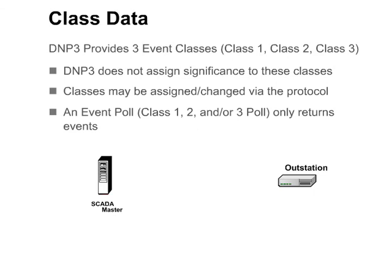The protocol specification does not assign any significance to the event classes. Some installations report binary input data in class 1 and analog input data in class 2. However, data can be assigned to the classes in any manner that makes sense in the system. Classes may also be assigned and changed via the protocol. An event poll — that is a class 1, 2, or 3 poll — only returns changes or events.